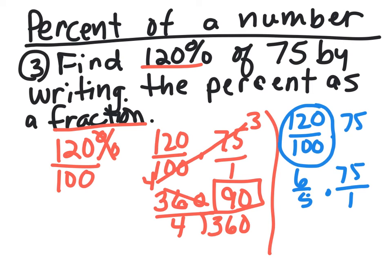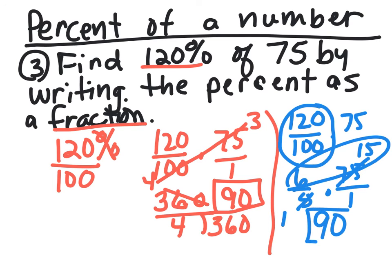Multiply 6 times - let's cross simplify. We can get a factor of 5 here, and a factor of 5 here would be 15. Now 6 times 15 is 90. So either way, 120% of 75 is 90. Thank you.